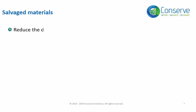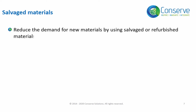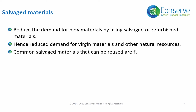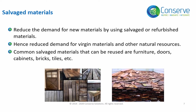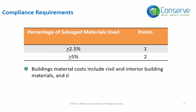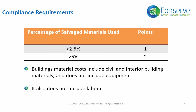The next strategy is to reduce the demand for new materials by using salvaged or refurbished materials instead of new materials. By doing so, we reduce the demand for virgin materials and other natural resources. Common salvaged materials that can be reused include furniture, doors, cabinets, bricks, tiles, etc. Points are awarded based on the percentage of building material cost spent on salvaged or refurbished materials. Building material cost includes civil and interior building materials, and does not include equipment, labor, or installation cost.